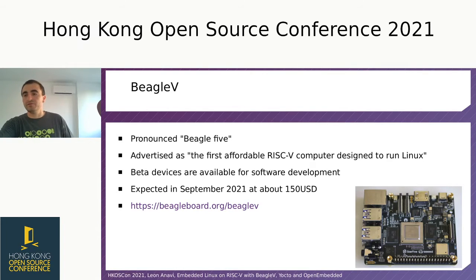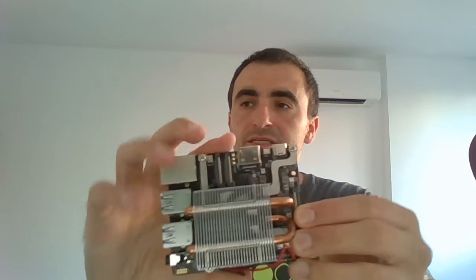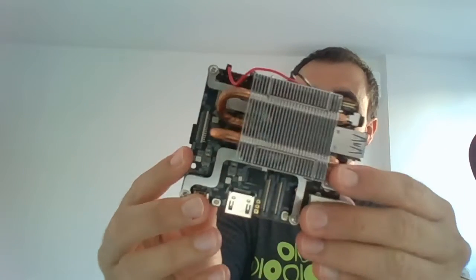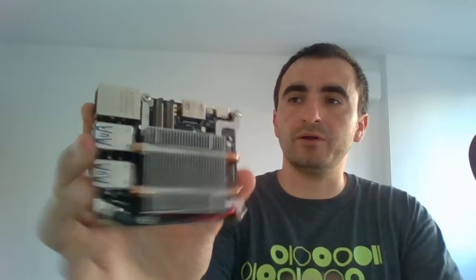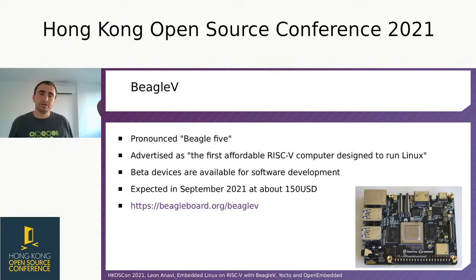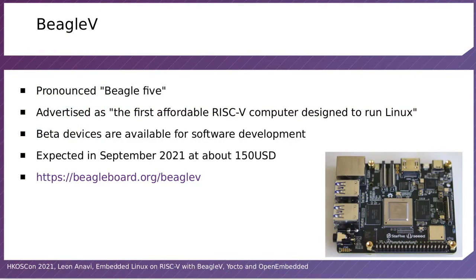Now let's focus on BeagleV-5 — and this is actually BeagleV-5. This is a beta unit I recently received as a software developer for evaluation. It is advertised as the first affordable RISC-V computer designed to run Linux. BeagleV-5 is not the first RISC-V computer capable of running Linux, but unlike previous ones it will be in an affordable price range, expected to be available in September for about 150 US dollars.